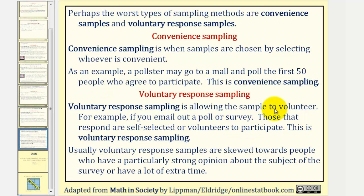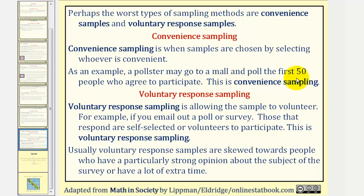Perhaps the worst types of sampling methods are convenience-based. Convenience sampling is when samples are chosen by selecting whoever is convenient. As an example, a pollster may go to a mall and poll the first 50 people who agree to participate. So while this method is usually quick and cheap, it often results in bias.